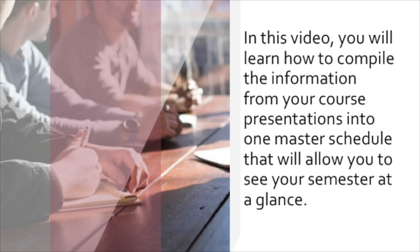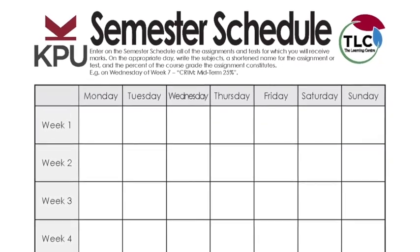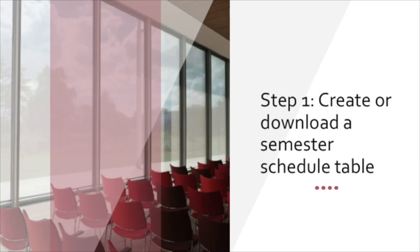Here are three steps you can take to use your course presentations to create a semester schedule. Step one: create a table with seven columns, one column for each day of the week and with rows for each week of the semester. Label the days Monday, Tuesday, and all the way along across the top of the table. Then label the weeks across the side of the table. At this point you can also add specific dates for each week of the semester.